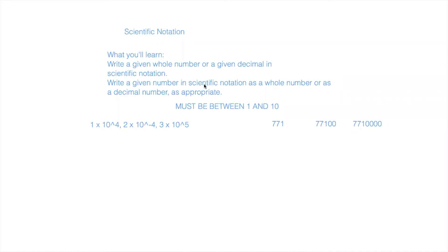Today we're going to be learning about scientific notation. In this unit, you'll learn how to write a given whole number or decimal in scientific notation, and how to write a number in scientific notation as a whole number or decimal. Scientific notation is important in math because a lot of the times we have very large numbers, like 7,710,000, and scientific notation is just a way to rewrite those numbers without having to write out all the digits.